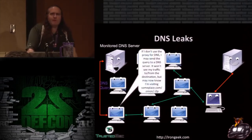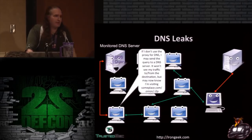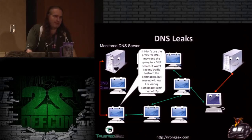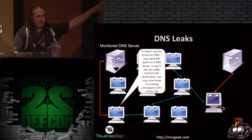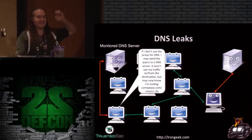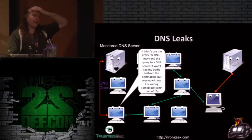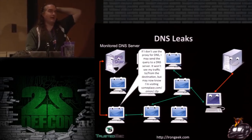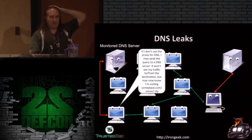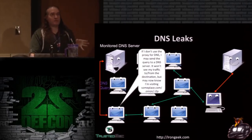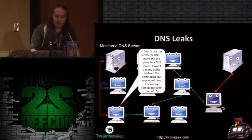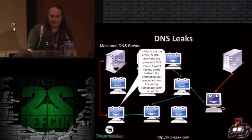Another issue: if you configure Tor in Firefox yourself rather than using the Tor Browser Bundle, there's a setting 'use DNS over the SOCKS proxy' that is off by default. If it's off, when you query a .onion address, your machine will first send the DNS query to your ISP's DNS servers. They won't see your traffic, but they will see you're trying to visit that particular site. To fix this manually, go into about:config and set 'network.proxy.socks_remote_dns' to true. Tor Browser handles this correctly by default — another reason to use the Tor Browser Bundle.